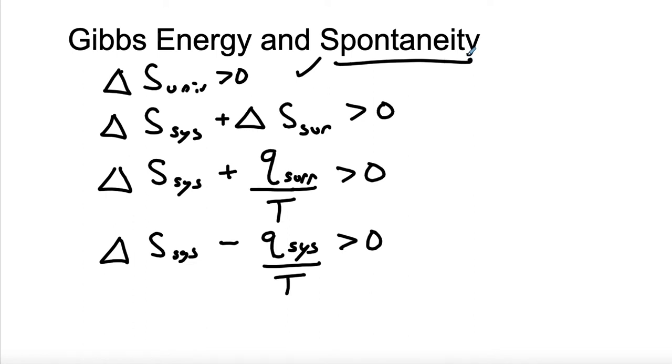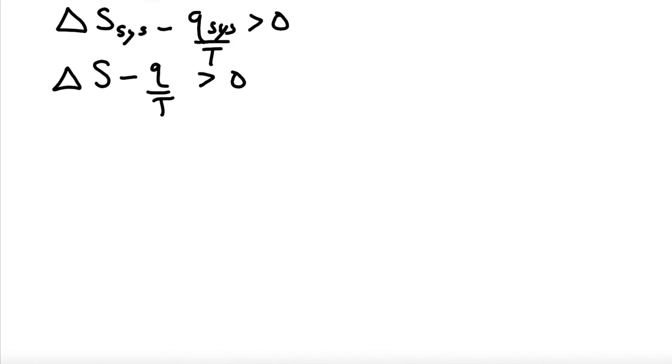At this point, notice what we've done. We have functions that are all just dealing with the system. The first term is the entropy change of the system, and the second term is the entropy change of the surroundings, just in a little bit of disguise. We're saying that this is the opposite of the heat that flowed into the surroundings. So we have entropy change of system plus entropy change of surroundings is greater than zero.